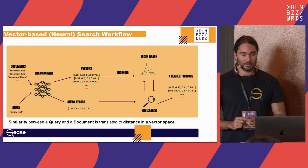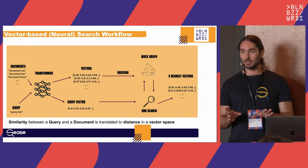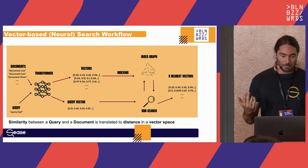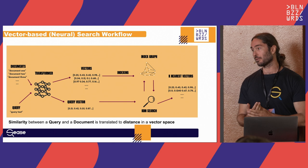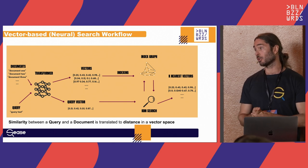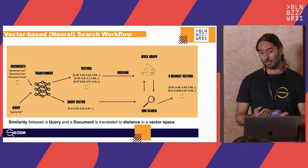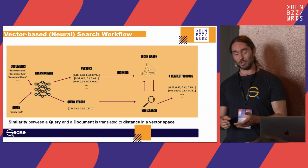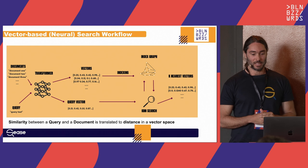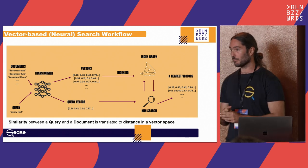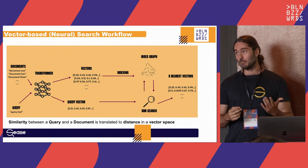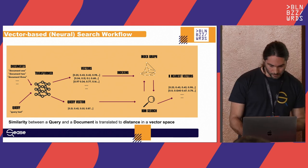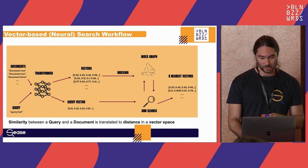Everyone here is probably familiar with vector-based search. What happens: you take a document, encode the document text to vectors using a large language model fine-tuned for sentence similarity, and index these vectors in a data structure. In Lucene and Solr, that's hierarchical navigable small world graphs (HNSW). At query time you do the same — encode your query to a vector and do k-nearest neighbor search. The similarity is basically the distance between the vectors in the vector space.